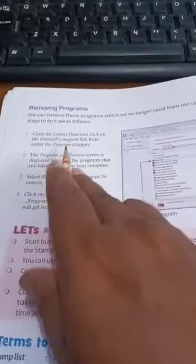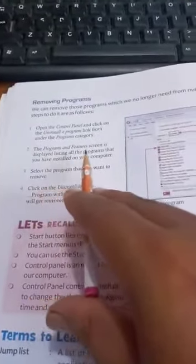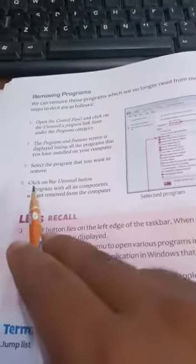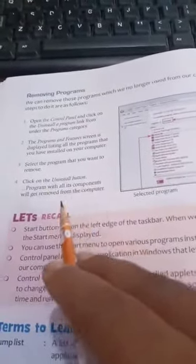I think all of you understand. If you have a system at home, please practice. Now, removing programs: we can remove programs we no longer need. Open the Control Panel and click on the Uninstall a Program link under the Programs category. The Programs and Features screen lists all installed programs. Select the program you want to remove and click the Uninstall button — the program and all its components will be removed.